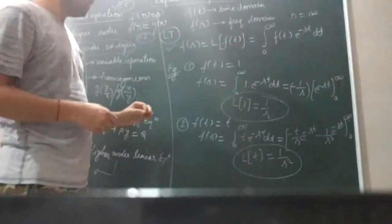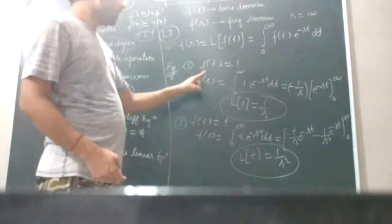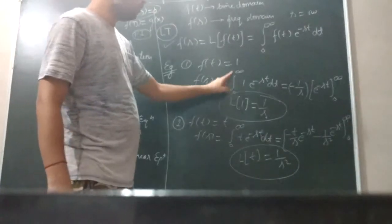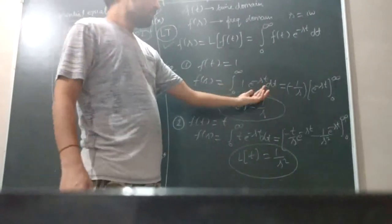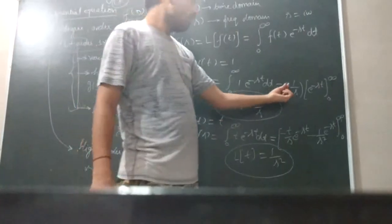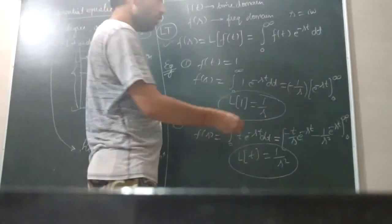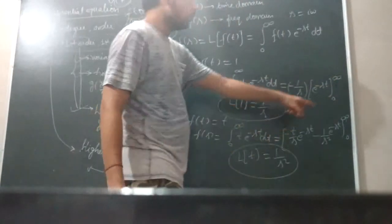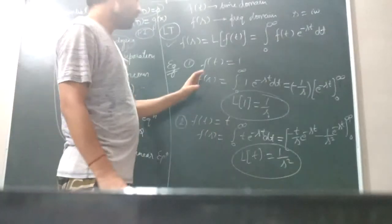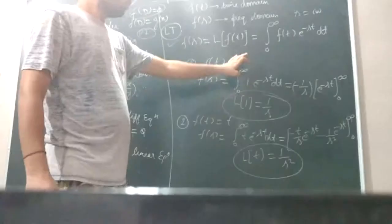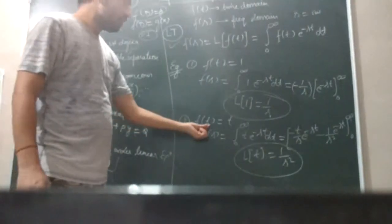To understand this, let's look at some examples. For example, if f(t) equals 1, then the Laplace transform F(s) equals the integral from 0 to infinity of 1 times e to the power minus st dt. Solving this integration gives minus 1 by s, times e to the power minus st, evaluated from 0 to infinity. When we apply the upper limit, the exponential goes to 0, and the lower limit gives 1, so the result is 1 by s. So the Laplace transform of 1 is 1/s.